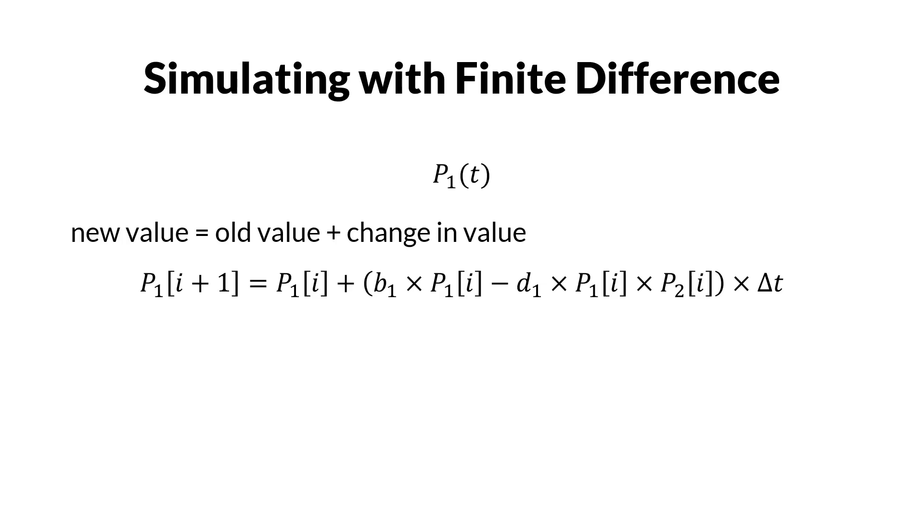We write the equation as p1 in iteration i plus 1 is equal to p1 in iteration i plus b1 times p1 in iteration i minus d1 times p1 times p2, and then multiply them by delta t. We also write the similar terms for the second population.